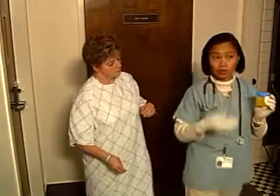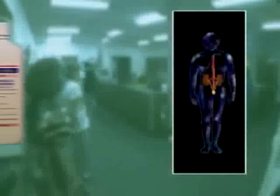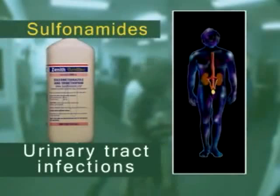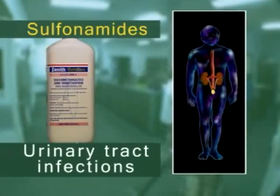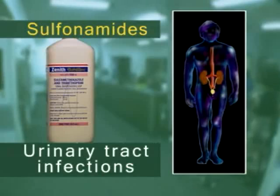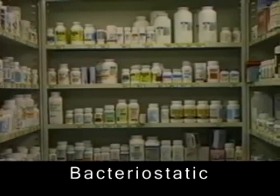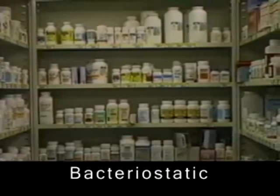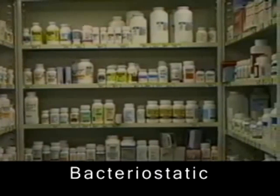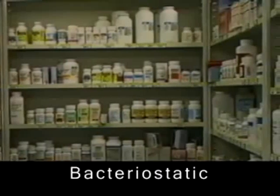An oral sulfonamide was ordered by the physician. Sulfonamides are most commonly used for treatment of urinary tract infections because they are active against most bacteria that cause UTIs, and they achieve high concentrations in the kidneys. Sulfonamides are bacteriostatic and work by inhibiting one of the steps involved in the biosynthesis of the nucleic acids and proteins essential to the growth of many bacteria.